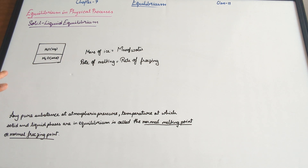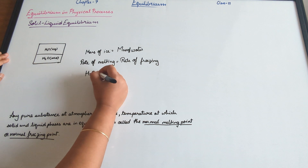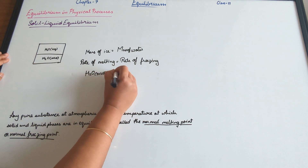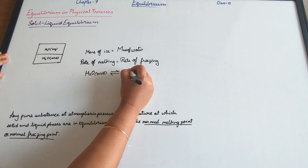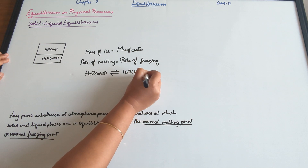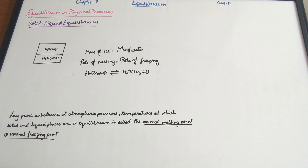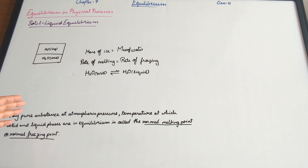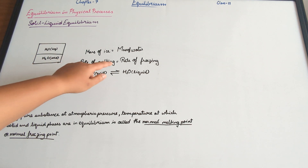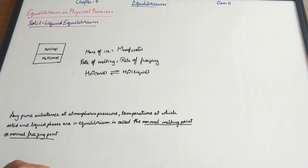Similarly, molecules of ice escape into the liquid phase. We can write this as: H₂O (solid) is in equilibrium with H₂O (liquid), where the brackets indicate the state of matter. If the temperature increases, more ice gets converted to water, meaning the rate of melting will be higher than the rate of freezing.